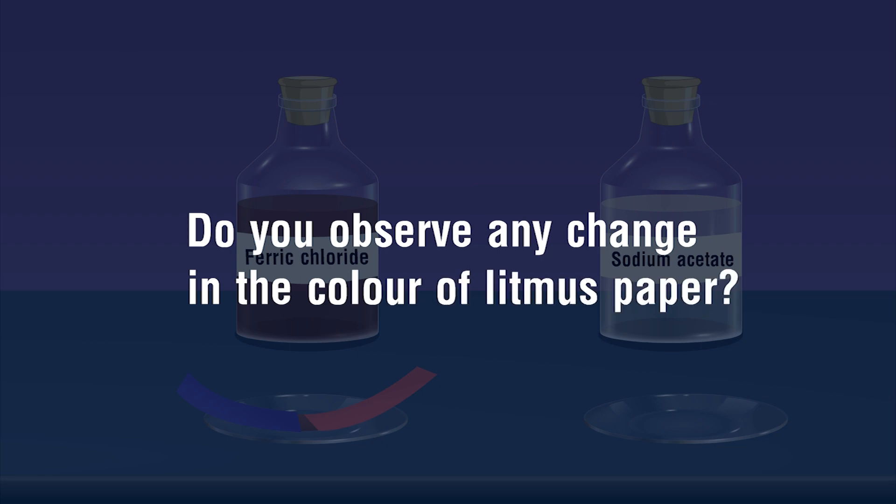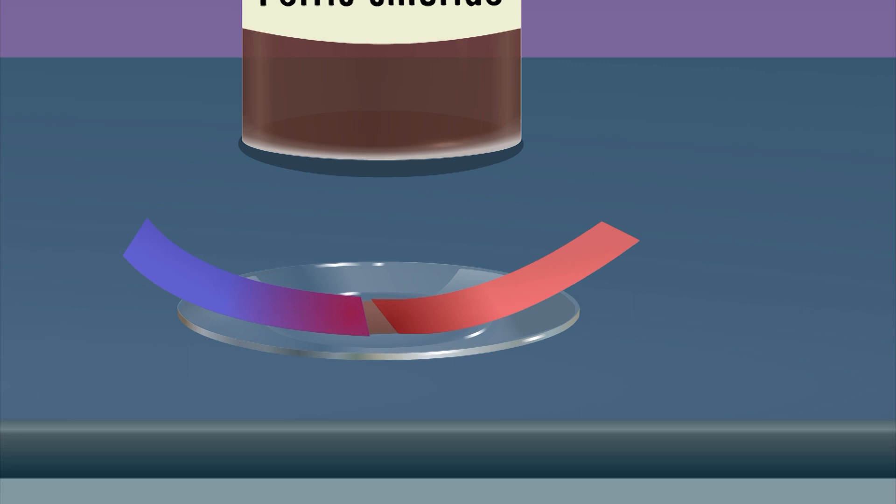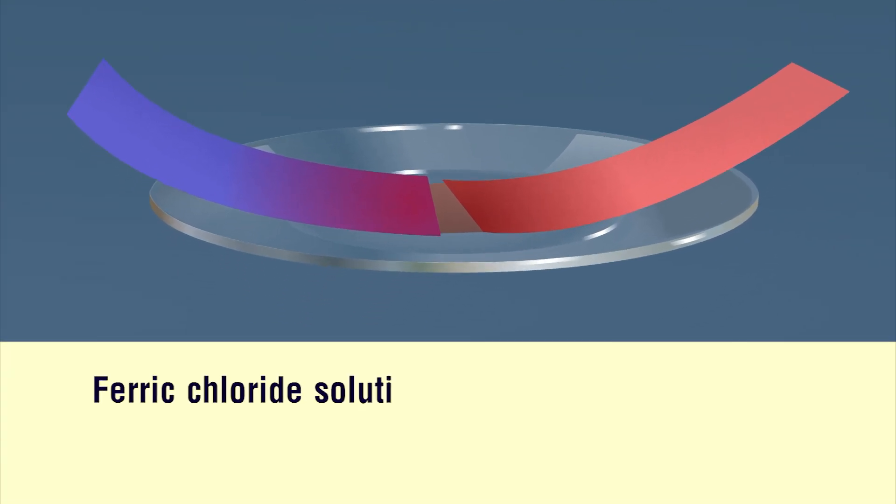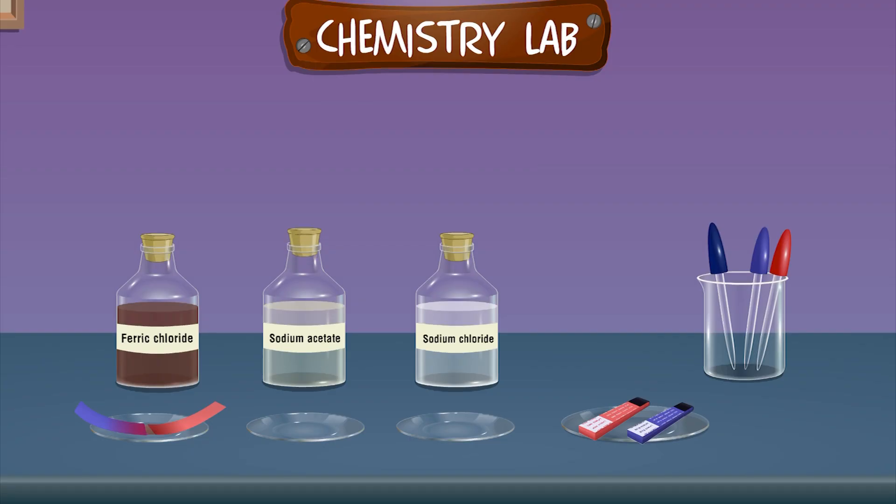Do you observe any change in the color of the litmus paper? Ferric Chloride solution turns blue litmus paper red, but it does not change the color of red litmus paper.